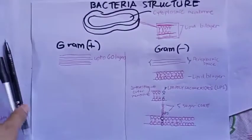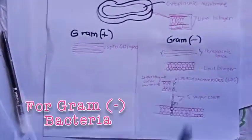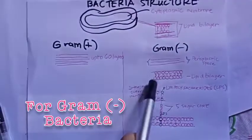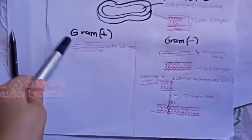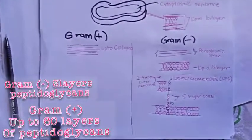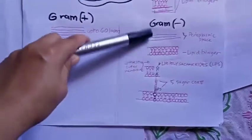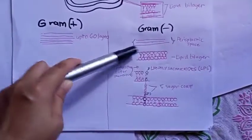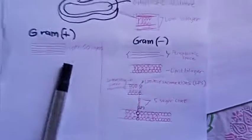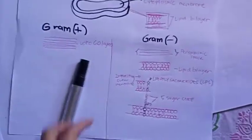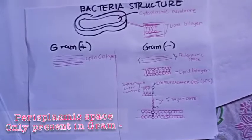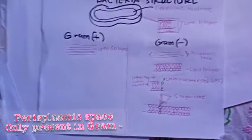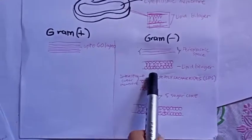The gram-negative has a very thin cell wall because it has only about 3 layers of peptidoglycans, while the gram-positive has up to 60 layers. On both sides of the gram-negative peptidoglycan layers is the periplasmic space, which is only present in gram-negative bacteria. Outside the peptidoglycans of gram-negative is another lipid bilayer.